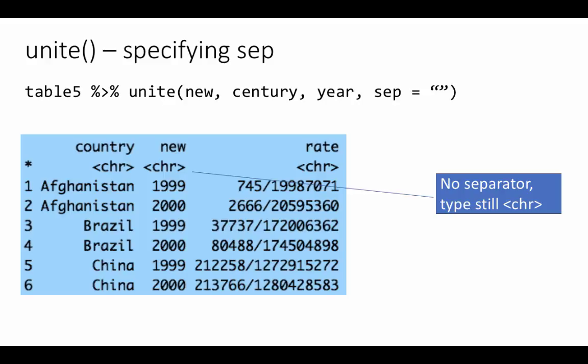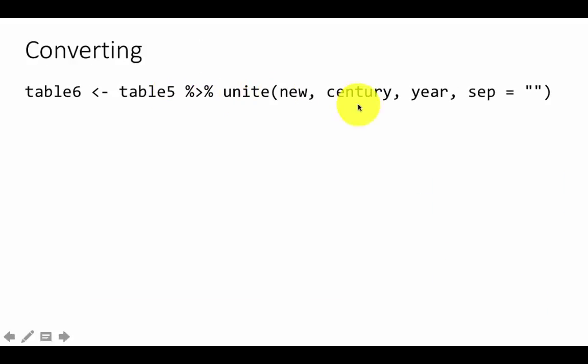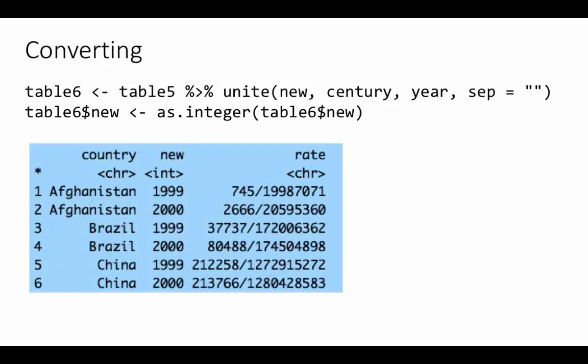When we perform these operations like separate and unite, we are still getting some character columns. What if we want to convert them into numbers? We can do that. For example, table five, unite century and year into one column with the separator of empty string. You'll get the new column as a character type column. We can convert it using these kinds of functions. We're saying replace it with as.integer table six dollar new. Notice that the uniting has taken place and the column is now an integer column.